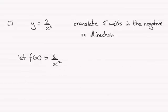And the one that translates a graph 5 units to the left in the negative x direction would be f of x plus 5. In other words, what we do is we replace the x here with x plus 5. So this would equal 2 all divided by x plus 5 all squared.